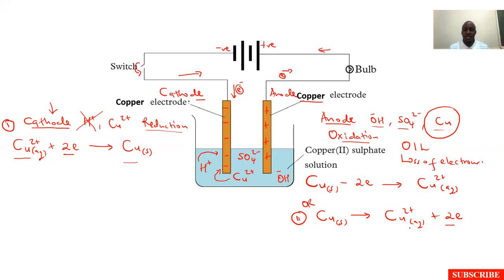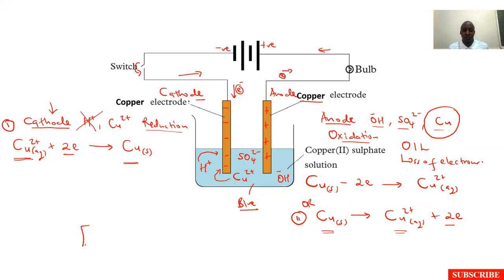Let's see what actually happens here. The solution will obviously remain blue, unlike in our first version where we used graphite as the electrode and the solution turned colorless with time. In this case, the solution remains blue because as the copper ions responsible for the blue color are being removed at the cathode, they are also being substituted back from the anode. So the concentration of copper(II) ions remains constant.